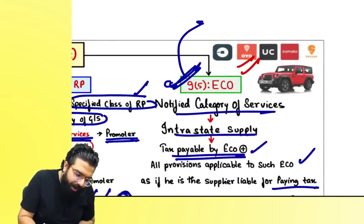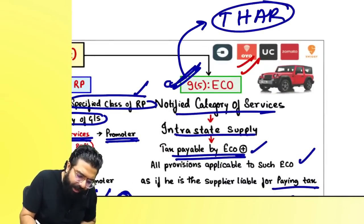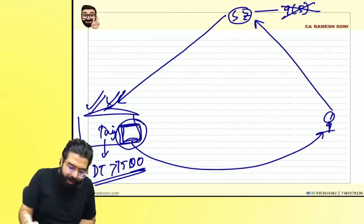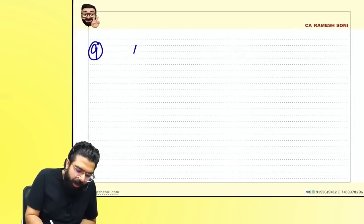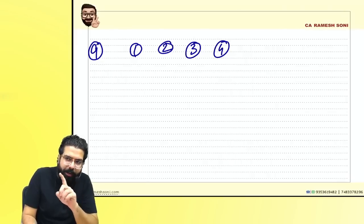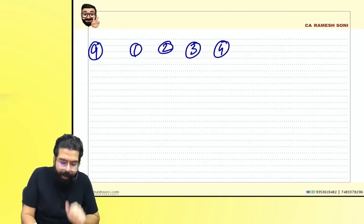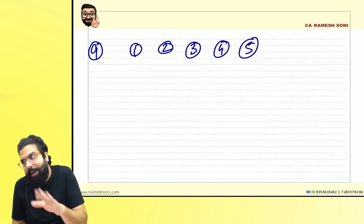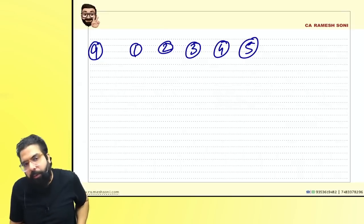Summary of Section 9: 9(1) — normal levy; 9(2) — HP man (five petroleum products, GST from notified date); 9(3) — DIAGRAMS mnemonic RCM services; 9(4) — promoter pays RCM on input/input services (shortfall from 80% threshold), cement, and capital goods bought from unregistered persons; 9(5) — THAR services (Transportation of passengers, Housekeeping, Accommodation, Restaurant) — e-commerce operator liable. Section 5 of IGST Act mirrors Section 9: 5(1) — normal levy on interstate supply, except alcoholic liquor, maximum 40% rate; 5(2) — HP man; 5(3) — same DIAGRAMS services, intrastate becomes interstate.